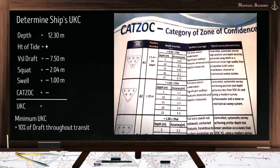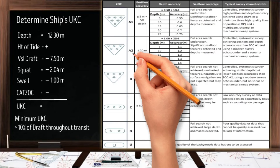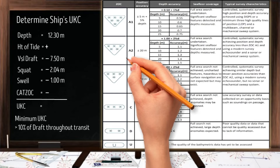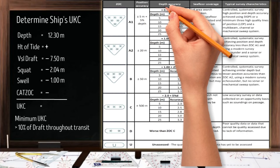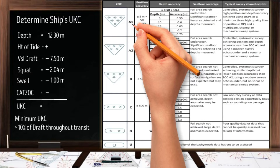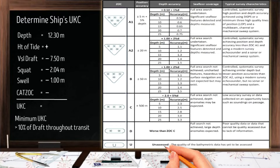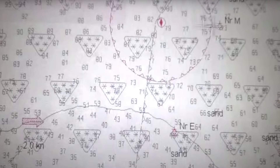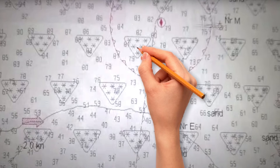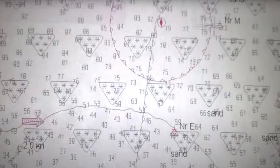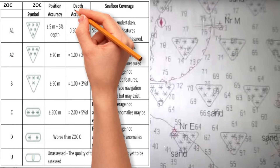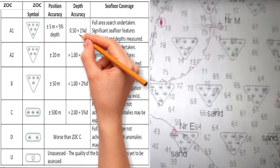Next is the category of zone of confidence, known as CATSOC. The zone of confidence is composed of 6 categories: A1, A2, B, C, D, and U, with their corresponding symbols and accuracy in position and depth. Category A1 is the most accurate, down to category U which is unassessed. Let us focus on depth accuracy for UKC calculation. On an ECTIS monitor with zone of confidence activated, symbols with 6 stars inside indicate category A1, where depth accuracy equals 0.50 meter plus 1% of the depth.